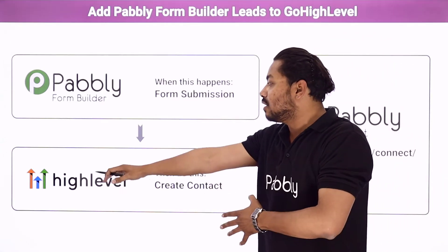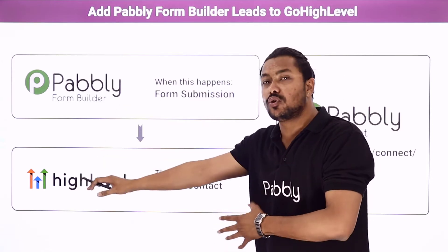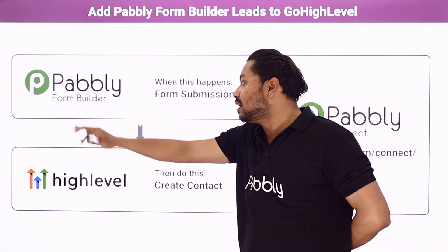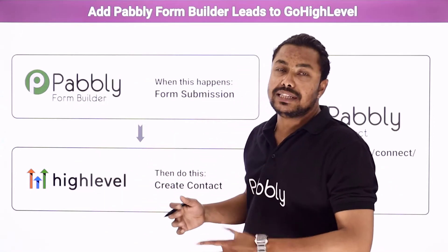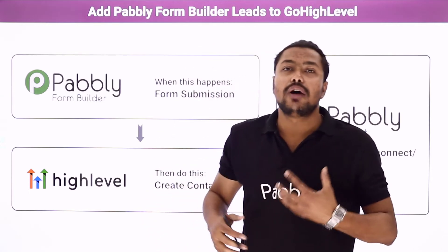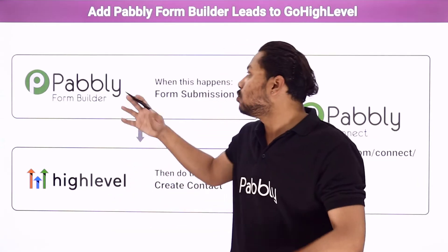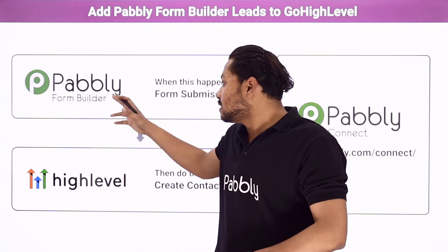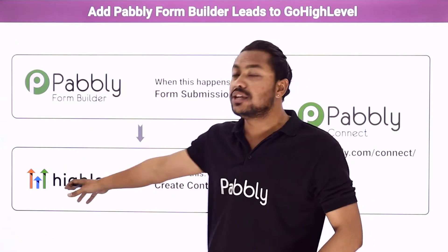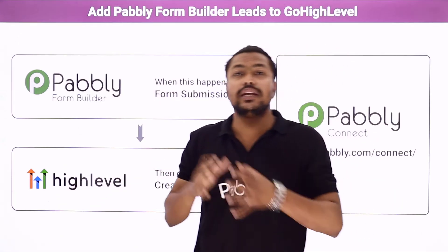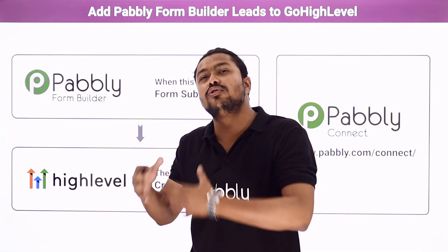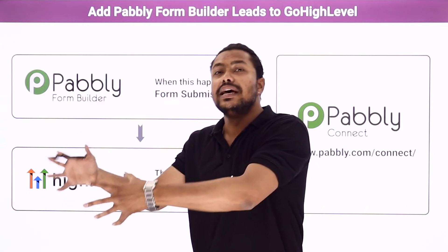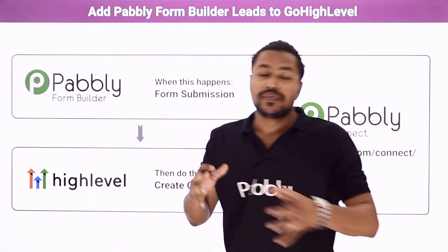Here you can see High Level is the branding name and the name of the application is Go High Level. Whenever we are having a new form submission in Pabbly Form Builder, an automatic contact will be created in Go High Level CRM. Suppose you are preparing something for marketing purposes and you have a survey form in Pabbly Form Builder — those form submissions will be saved as a new contact in Go High Level CRM, and then you can use those contacts for several marketing purposes, lead generation, and other promotional SMS or mails.